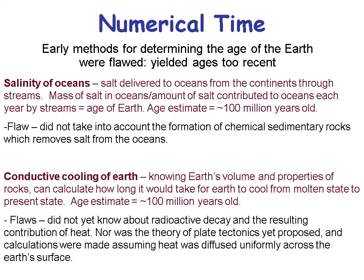The other numerical time method that didn't work was conductive cooling of the Earth: knowing the Earth's volume and rock properties, you could calculate how long it would take to cool from a molten state to the present. The flaw was that they didn't know about radioactive decay and the heat it contributes inside the Earth, nor was plate tectonics proposed, so calculations assumed heat diffused uniformly across the Earth's surface, which we now know is not true.